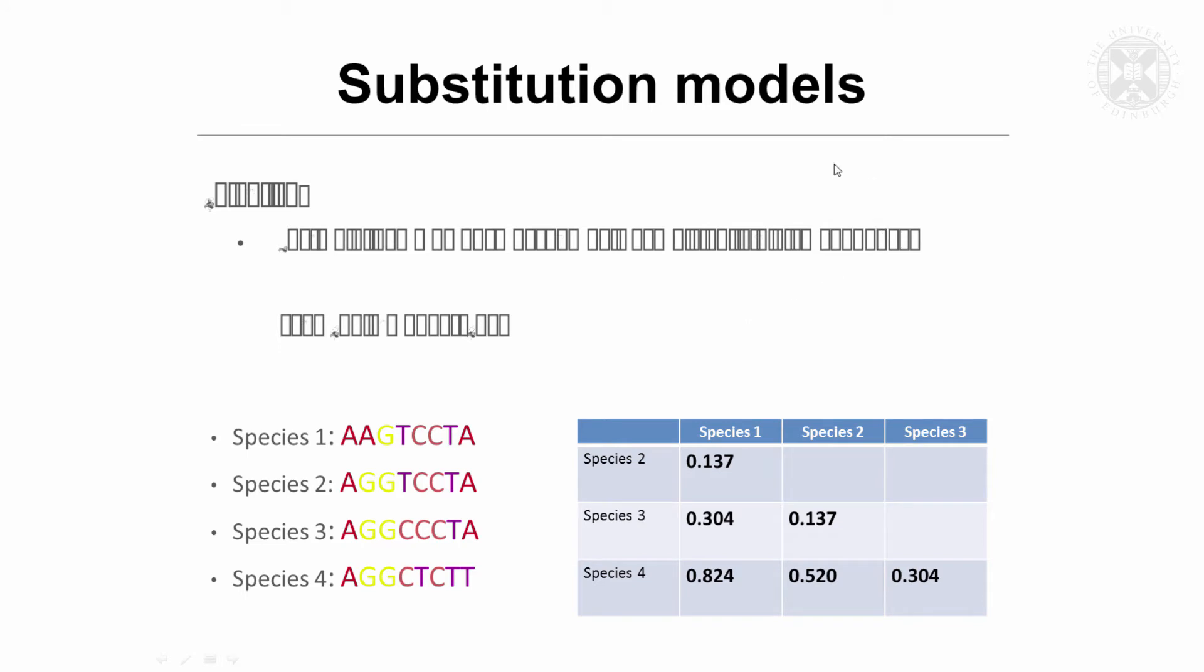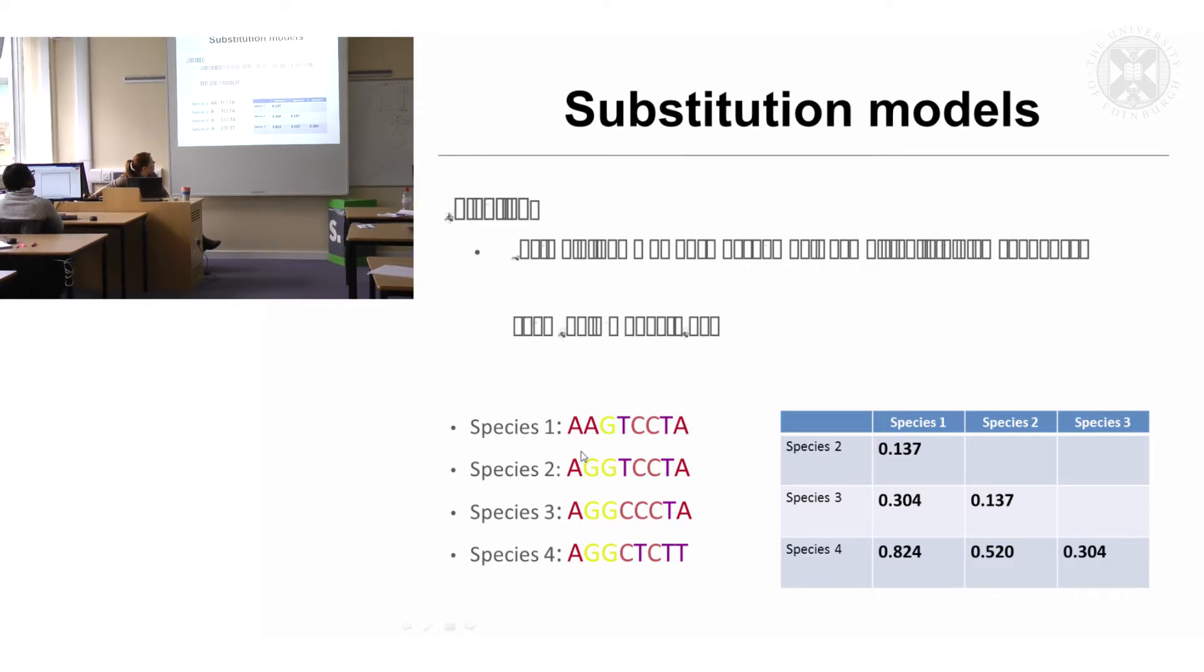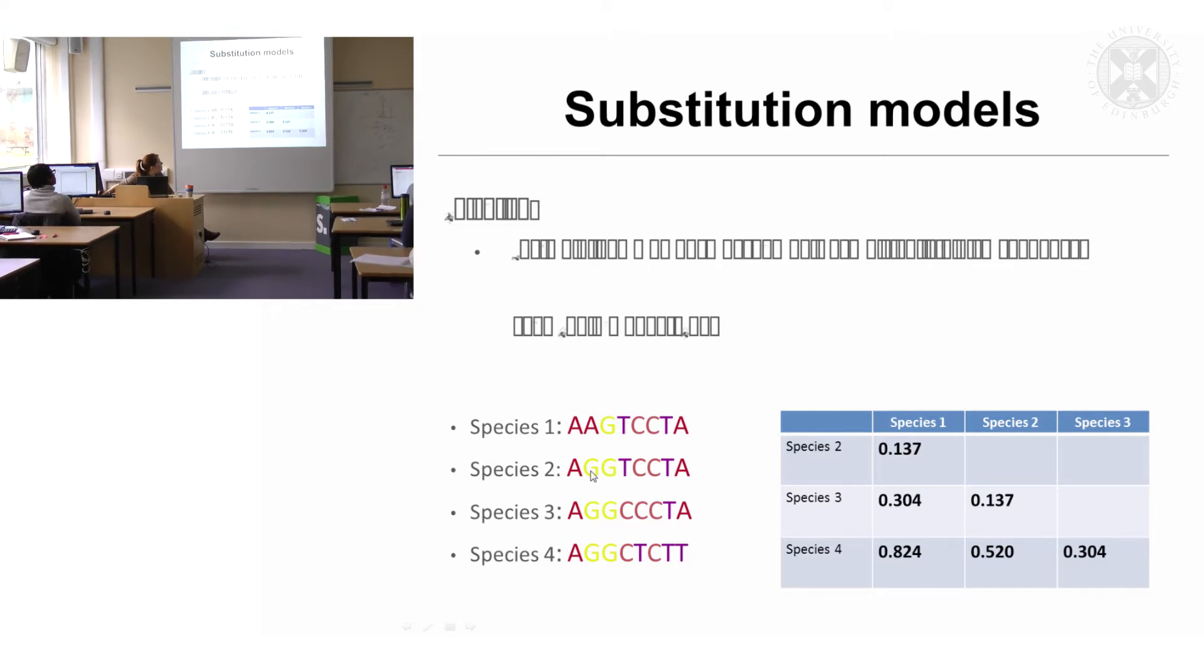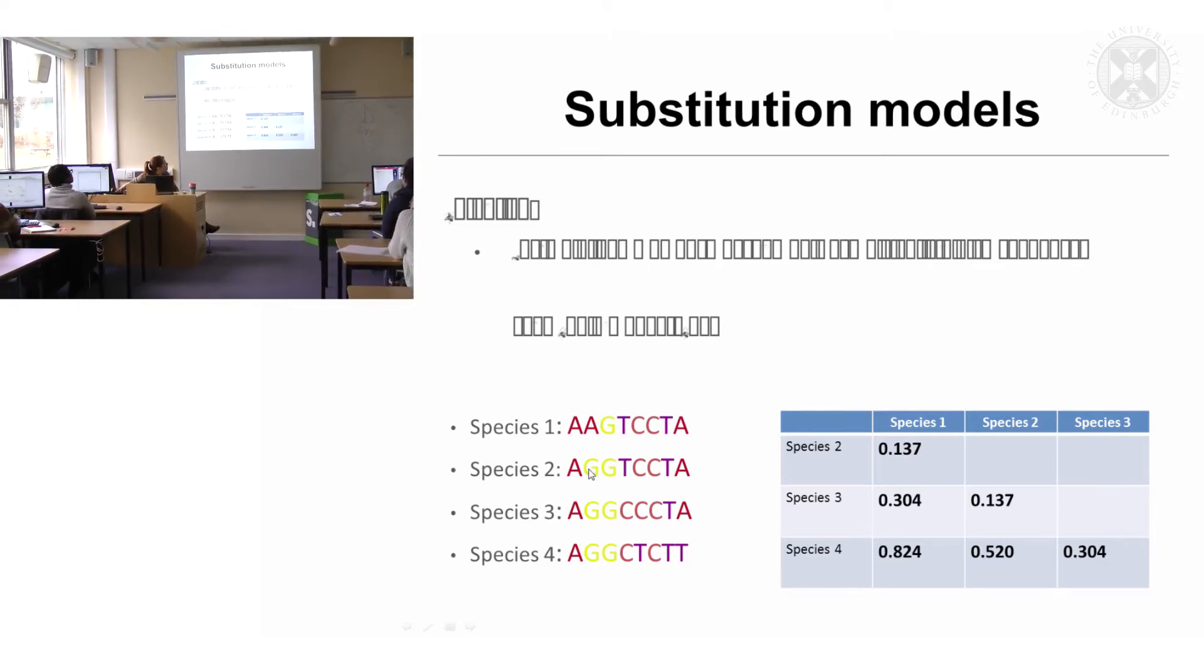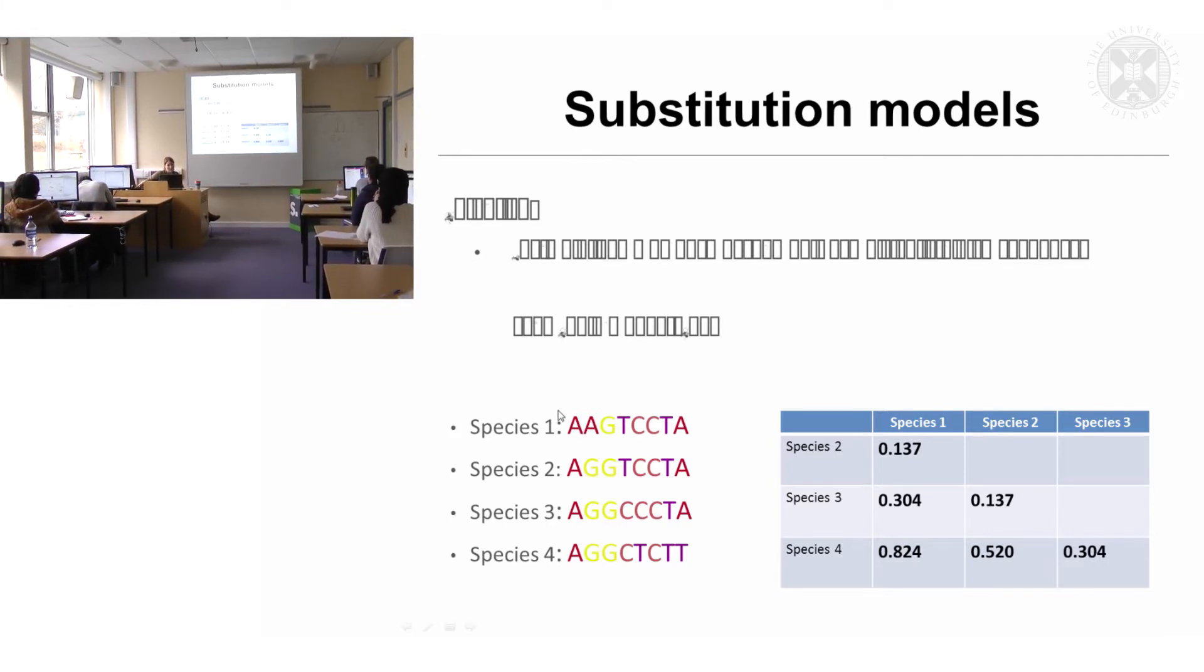So something that I mentioned before were substitution models. I was talking about these variants at a particular location, so you can see here that this has a different base to all of these, which is fine. That's the principle for looking at differences in order to make a tree, but actually a phylogeneticist wants to make it a little bit more complicated than that because it's not as simple as saying that base has changed to that nucleotide. In the course of evolution, some nucleotides are more likely to change into other nucleotides than others.